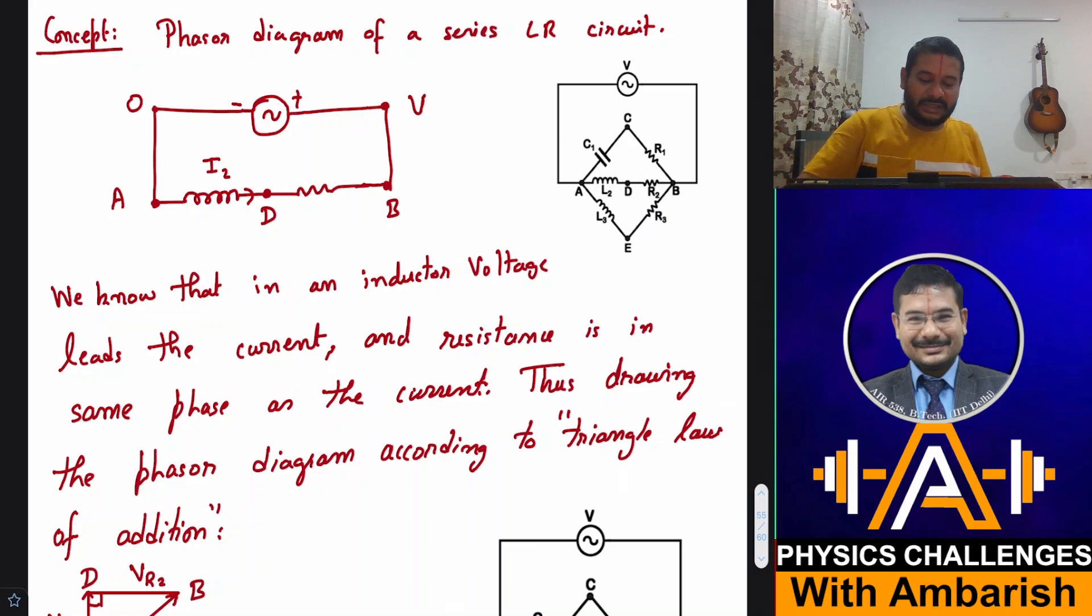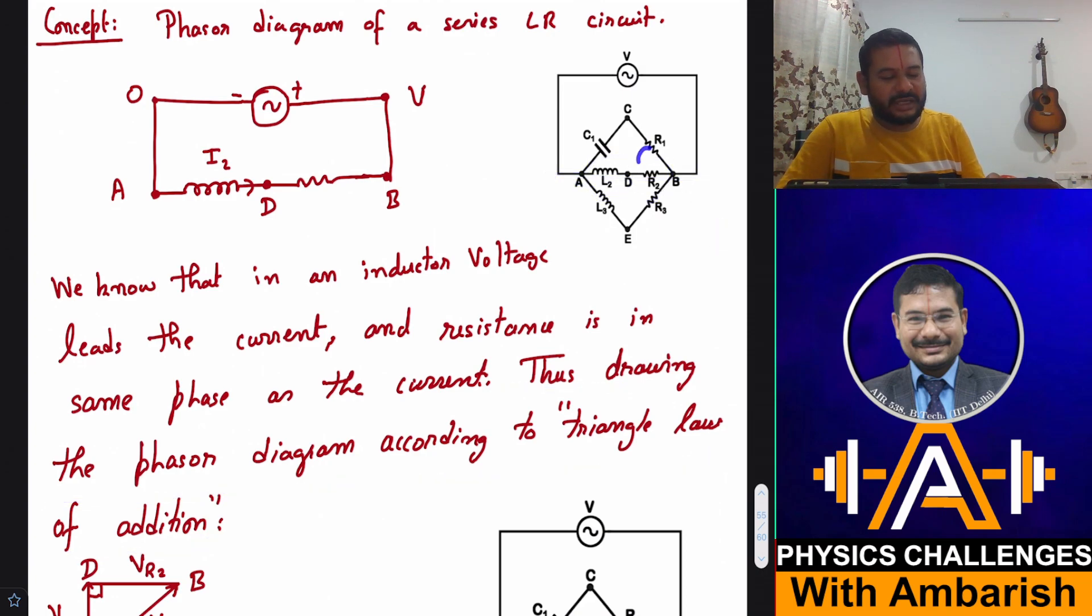This has got three series circuits: a series CR circuit, a series LR circuit, and another LR circuit. Let's eat the elephant bit by bit. We know that in an inductor, the voltage leads the current, and the resistance is in same phase as the current. All of this is standard fact.